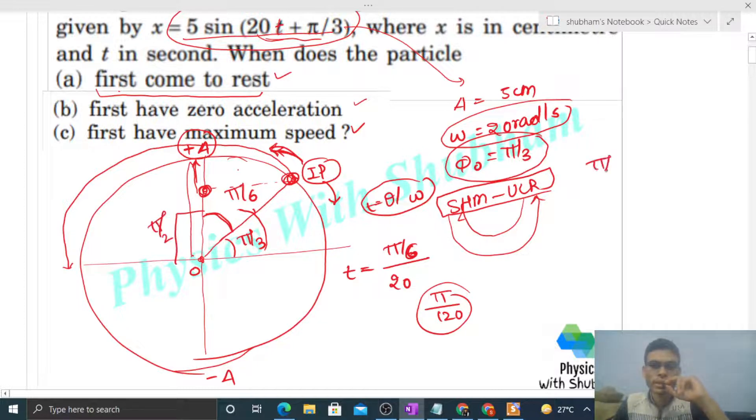So the total becomes π/6 + π/2, and with what angular speed? Omega, which is 20. So this will be the answer of part b.